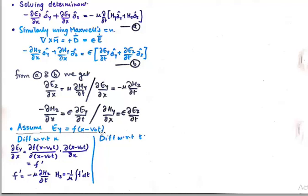Now comes the most important part. We take one component E_Y — since E_X is zero, E_Y is present — and assume E_Y to be a function of x and t. Any propagating wave changes with respect to space, represented by a function of x, and also with respect to time. Here v₀ represents the velocity or speed at which it is changing, and the minus sign represents that it is moving in the forward direction. We now differentiate E_Y with respect to x and with respect to t.